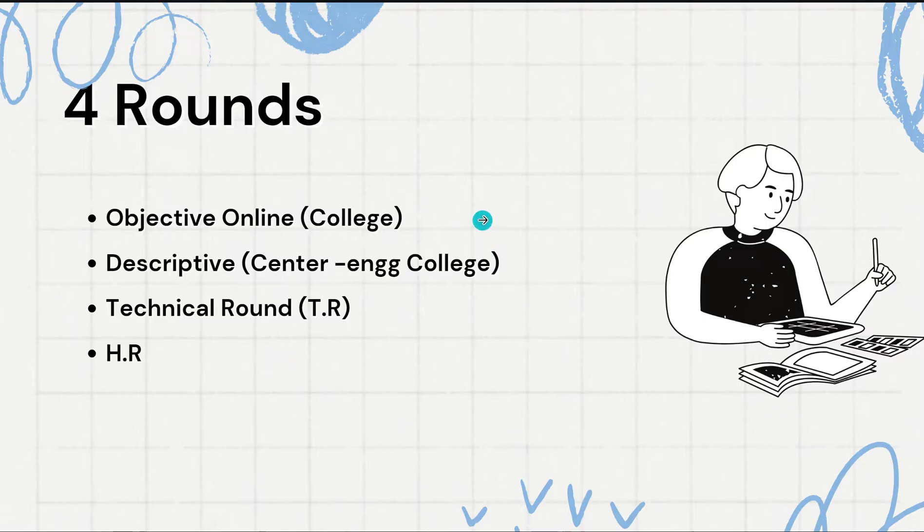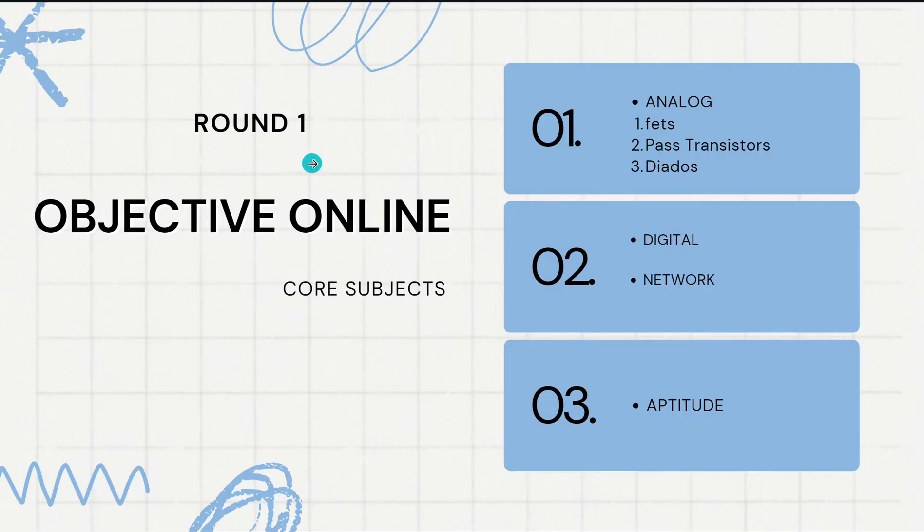Let us go deep into these rounds. Round 1 is an objective online round and it is based upon core subjects. First one is analog based on FETs, pass transistors and diodes. Second one is digital networks, and third one is aptitude.